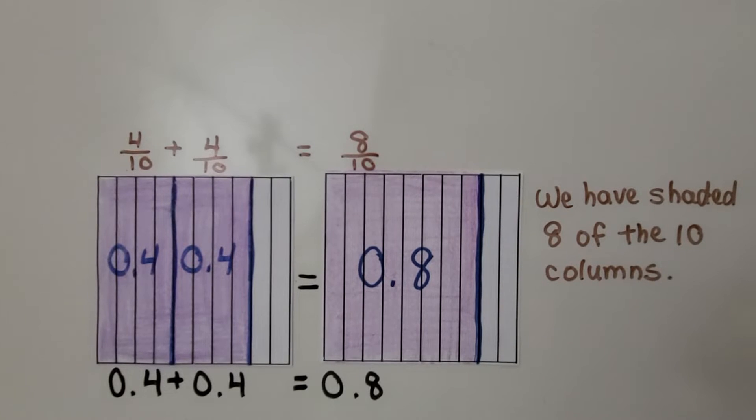To model four tenths plus four tenths, each column is a tenth. We shade in four of them, we shade in four more, it's equal to eight tenths. We've shaded eight of the ten columns.